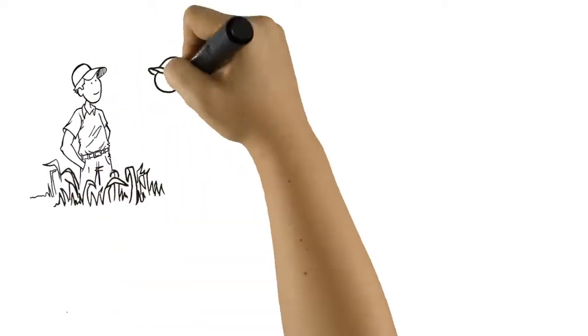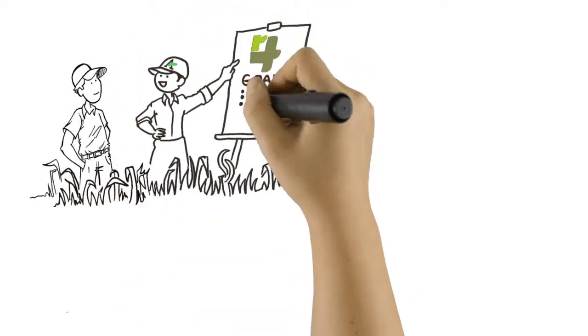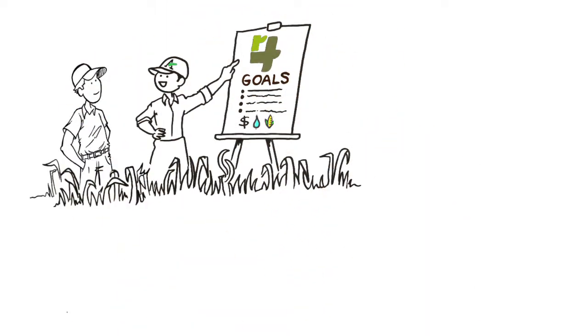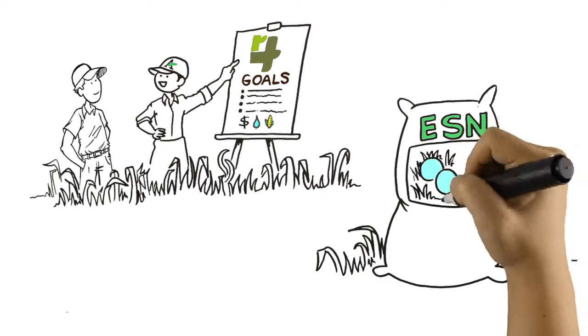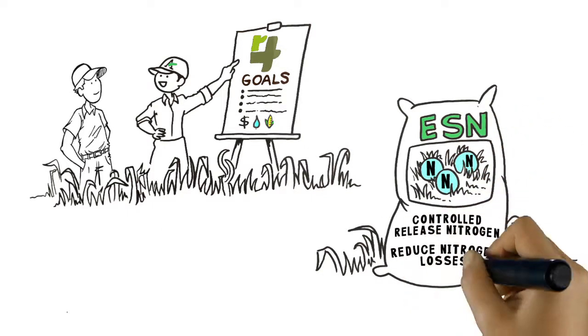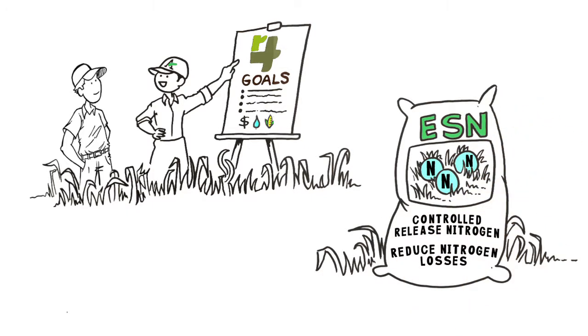We help growers to achieve their 4R goals by providing farm-specific agronomic advice and best management practices, like precision application and ESN, a controlled release nitrogen that increases yields while helping to reduce nitrogen losses to the environment.